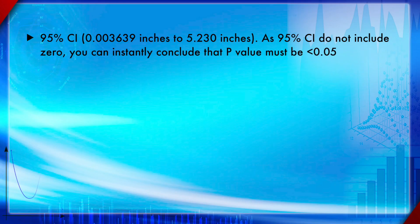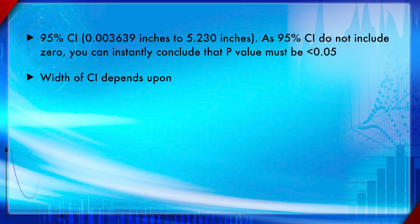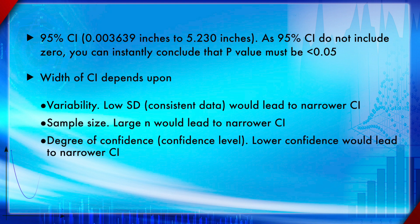From the 95% CI, you can instantly conclude: if the CI does not include zero, then the p-value is less than 0.05, without even performing a t-test. There is no point doing a t-test the classical way if you already have the CI, unless you need the exact p-value. The width of the CI depends on variability, sample size, and the degree of confidence.